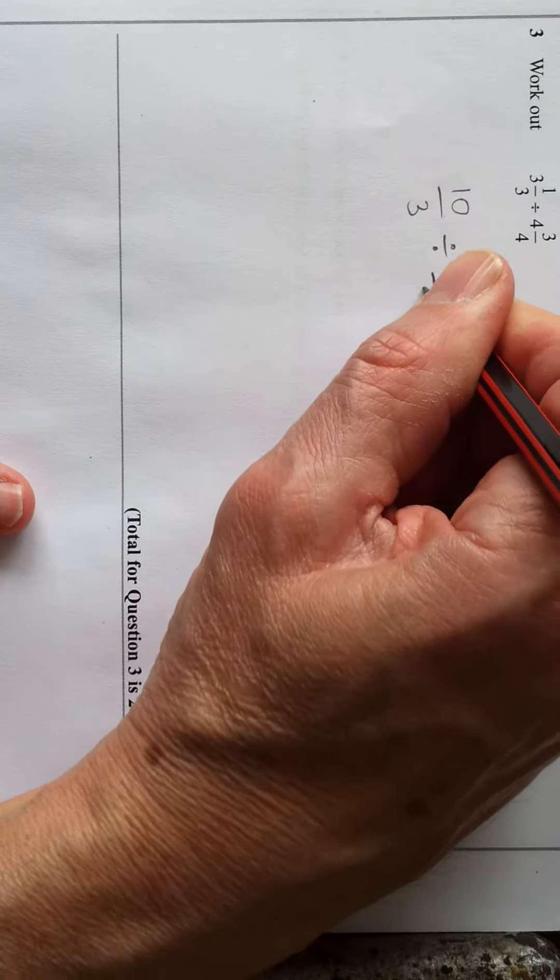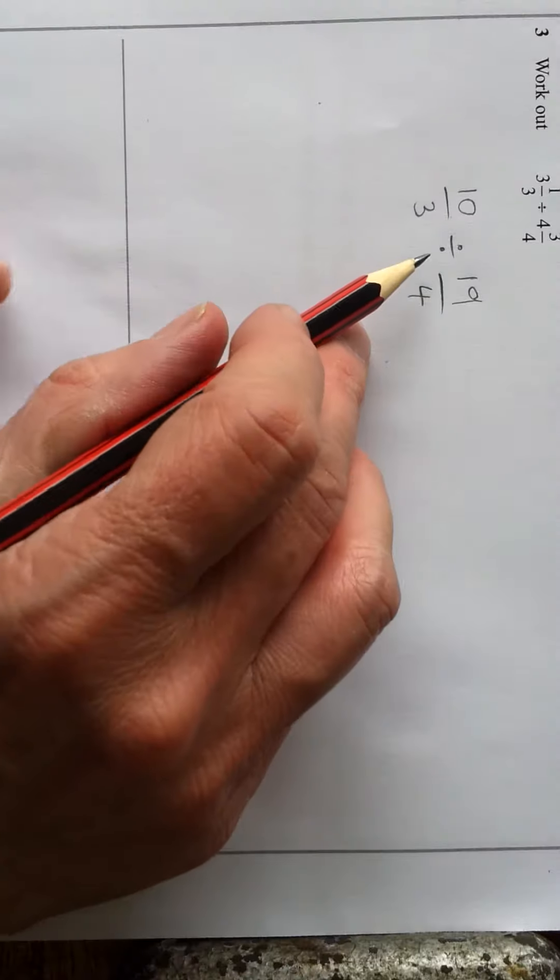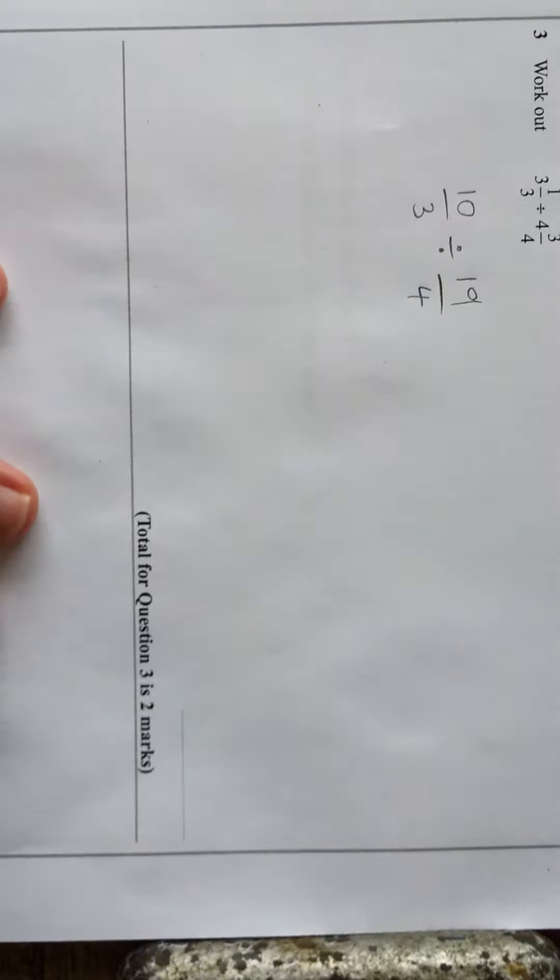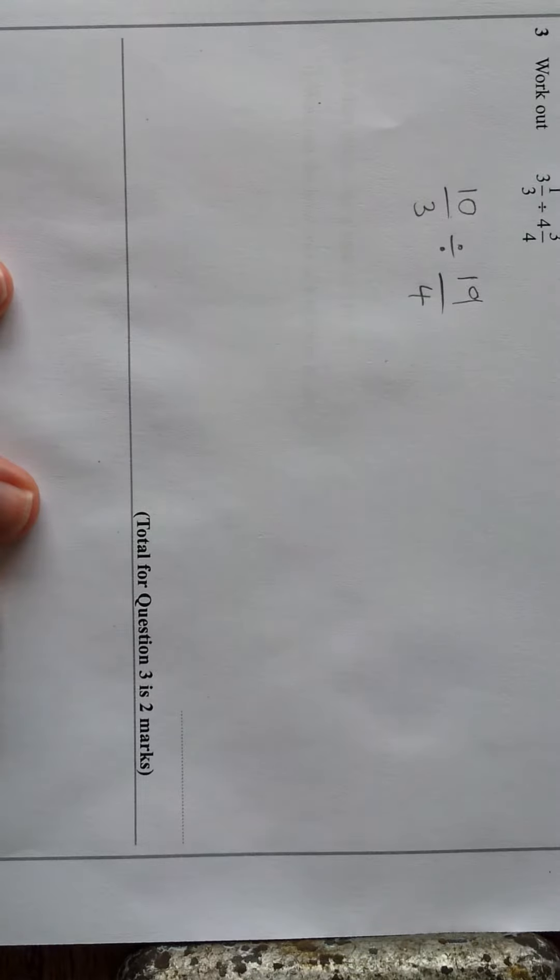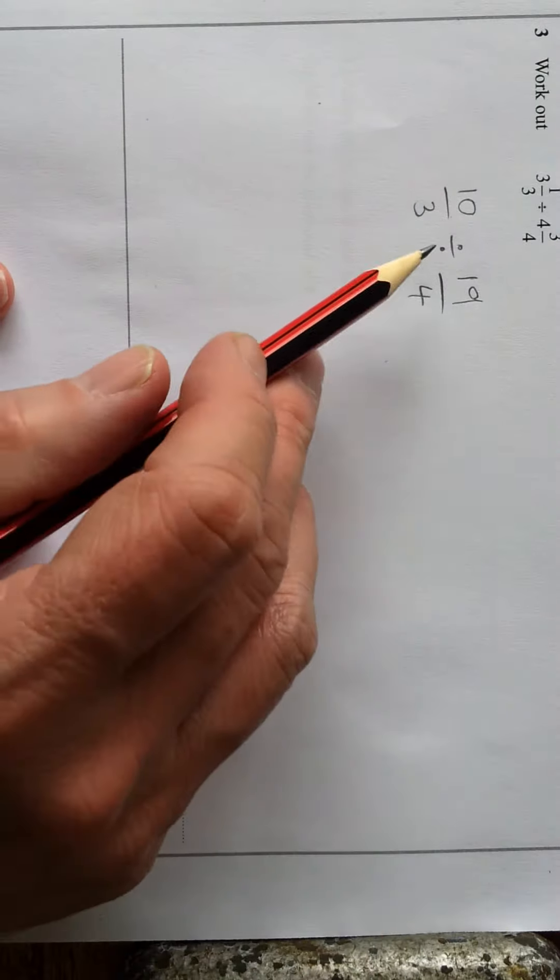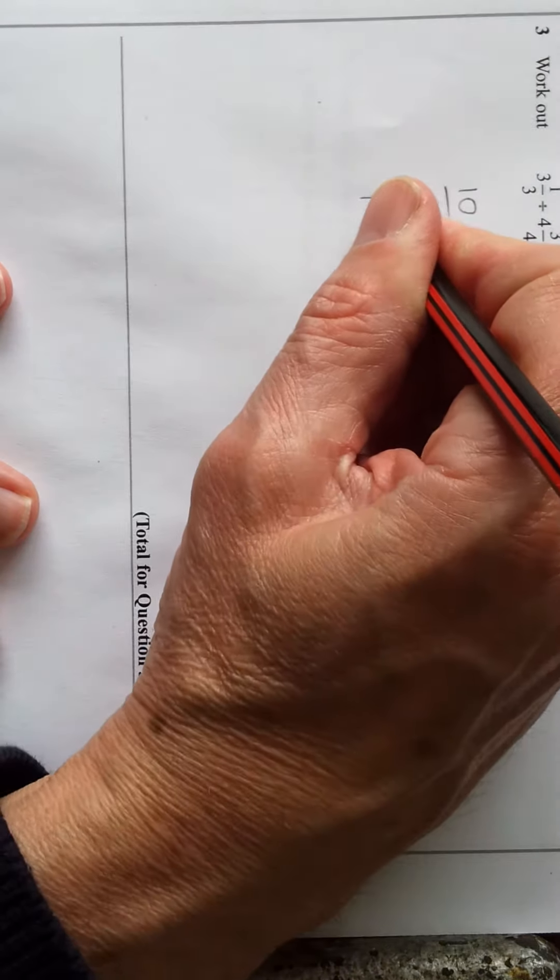Okay, now we need to convert the division into a multiplication before we can work it out a bit easier. So for this one, what we do is we turn this division into a multiplication. We'll get ten over three.